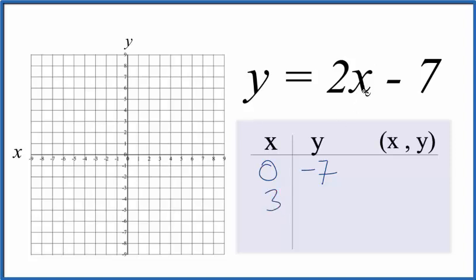And how about 4? We put 4 in. 2 times 4 is 8, 8 minus 7 is 1. So these are the points that we'll graph for the equation y equals 2x minus 7.